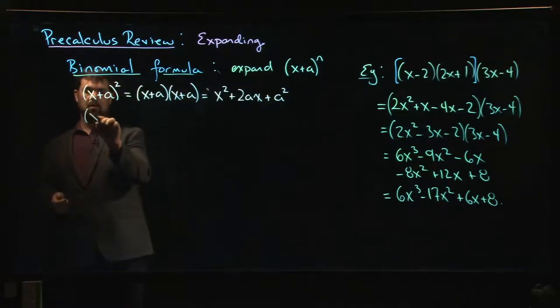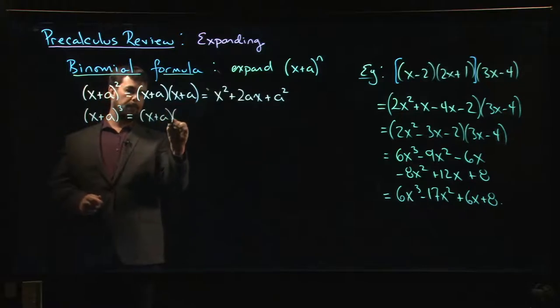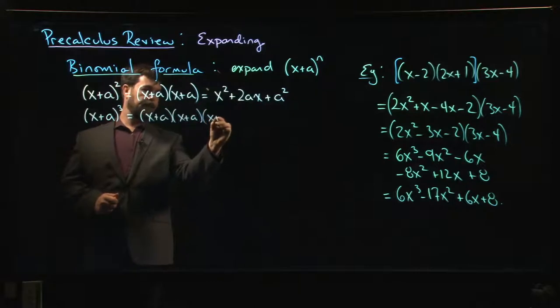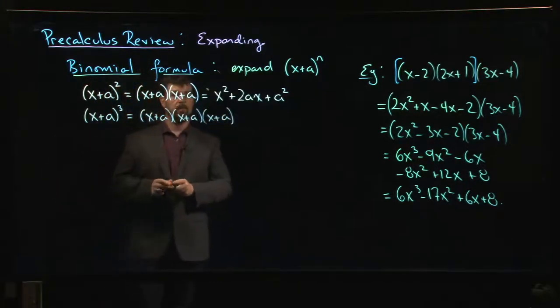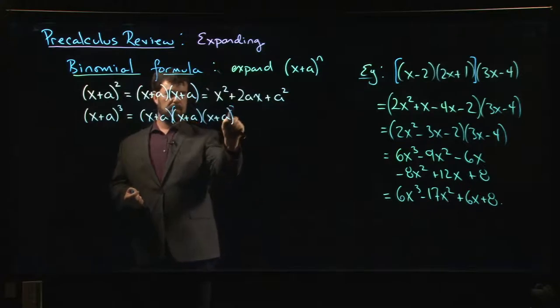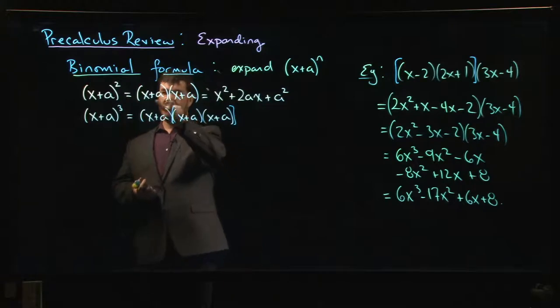What if we wanted to cube? Well, cubing means multiply by itself three times. Just as we saw before, when you have three or more things to multiply, you can choose to group. We'll group like that, for example, and inside the brackets we've got (x + a)², which we've just done.